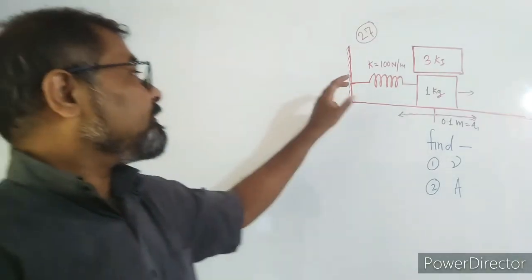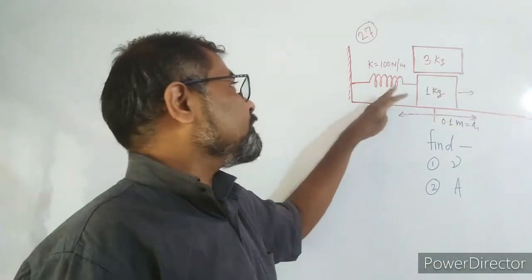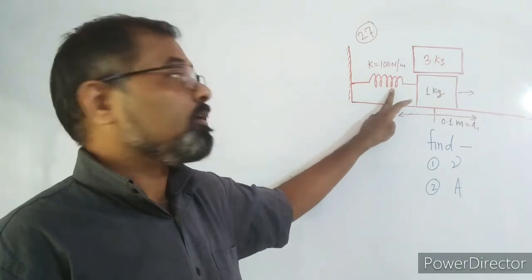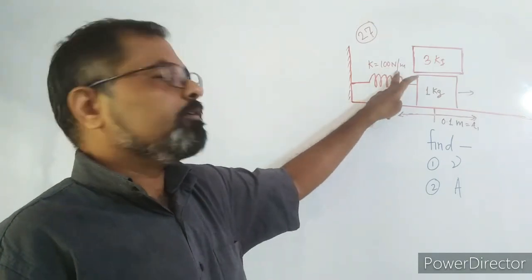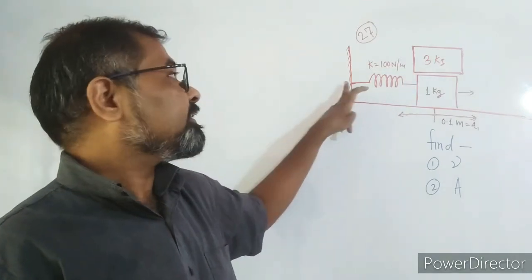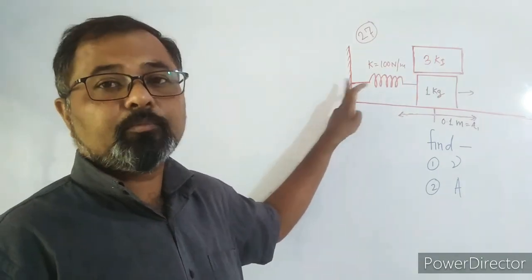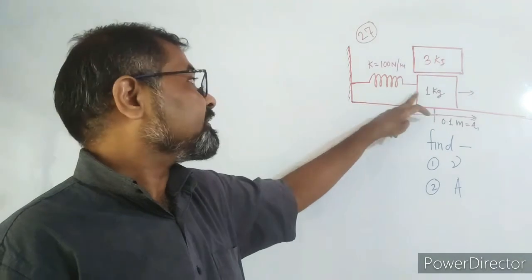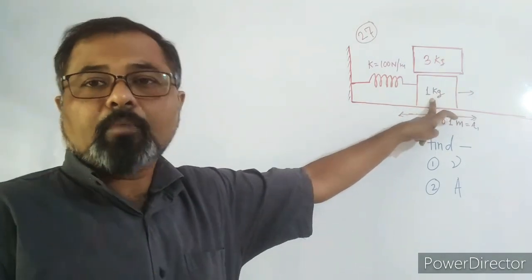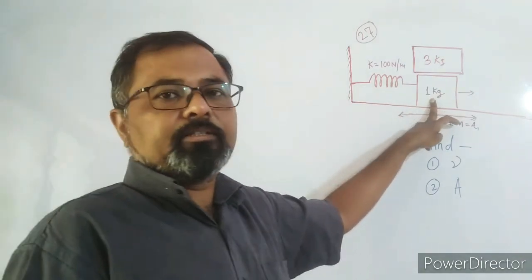For numerical 27, the system has a spring constant of 100 N/m, with one end connected to a rigid support and the other end connected to the block of mass 1 kg.